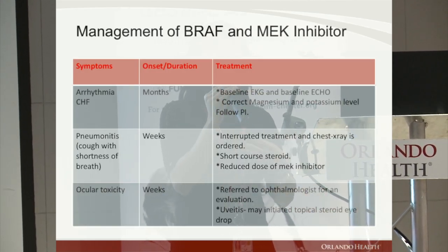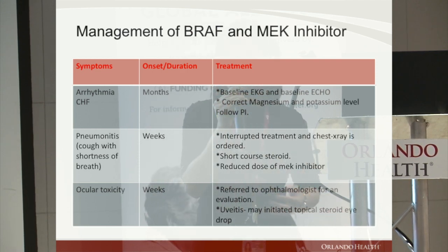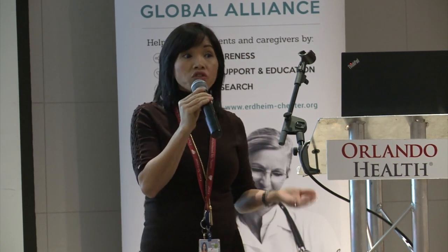Pneumonitis is a rare side effect that typically happens when using a MEK inhibitor. Symptoms include shortness of breath and a persistent dry, non-productive cough. If that happens, pick up the phone and call your oncologist right away. We will stop the medication, get a chest x-ray, and if confirmed, start you on a corticosteroid such as a Medrol dose pack for five days. Depending on severity, the medication may be permanently discontinued, or we will dose reduce and monitor you closely.